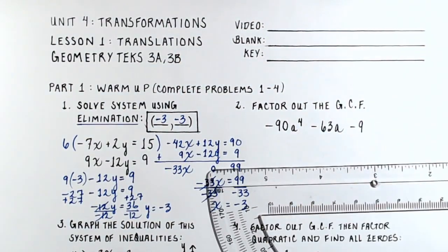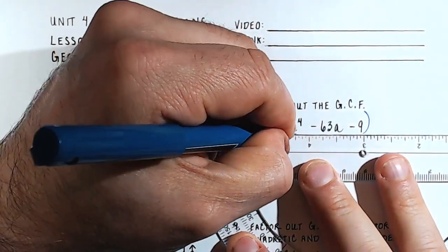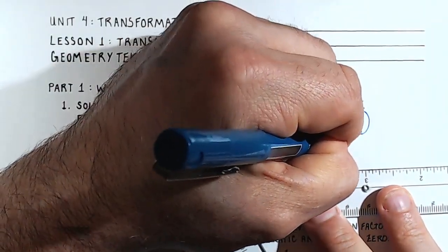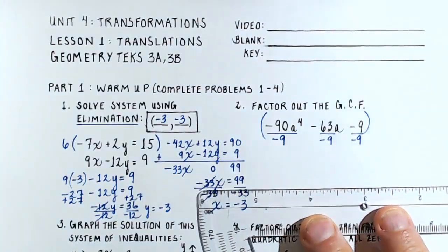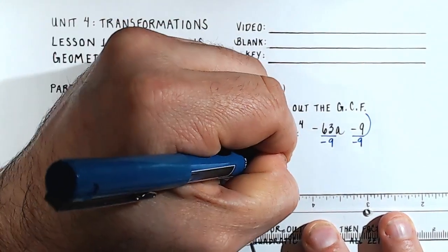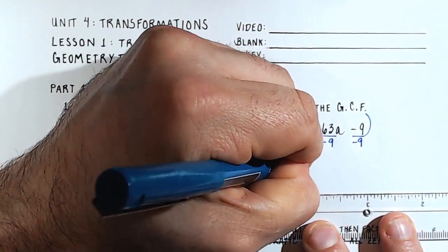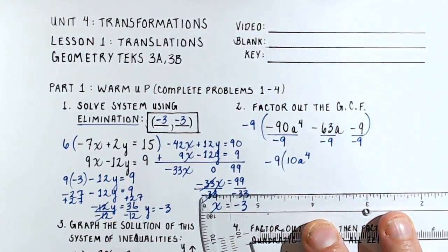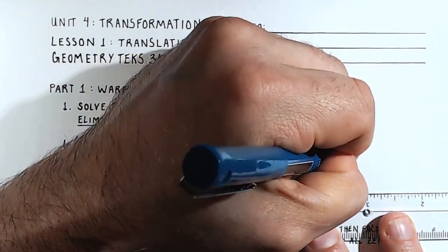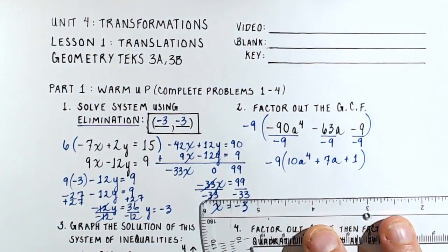Moving on to number 2, we're asked to factor out the greatest common factor. Negative 9 is the greatest common factor of all three terms in the trinomial, so we pull out a negative 9. That gives us negative 9 times open parenthesis: positive 10a to the 4th, plus 7a, plus 1, close parenthesis.